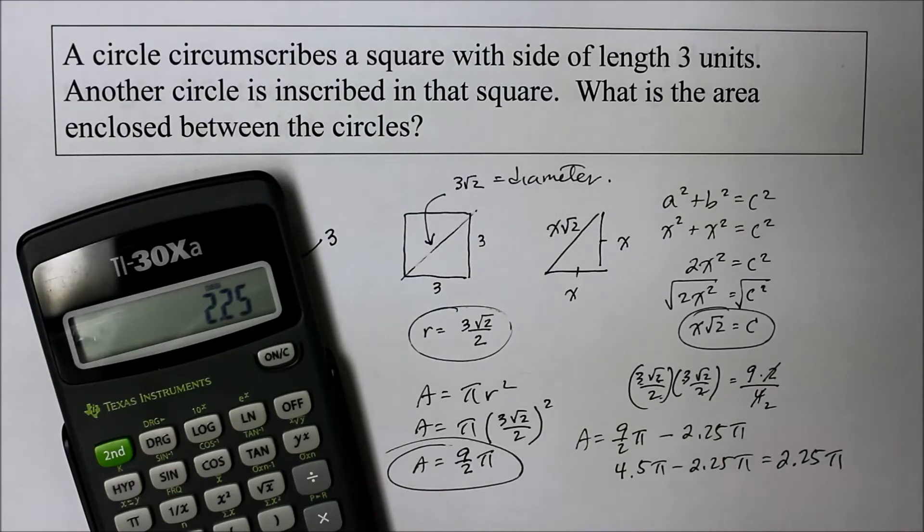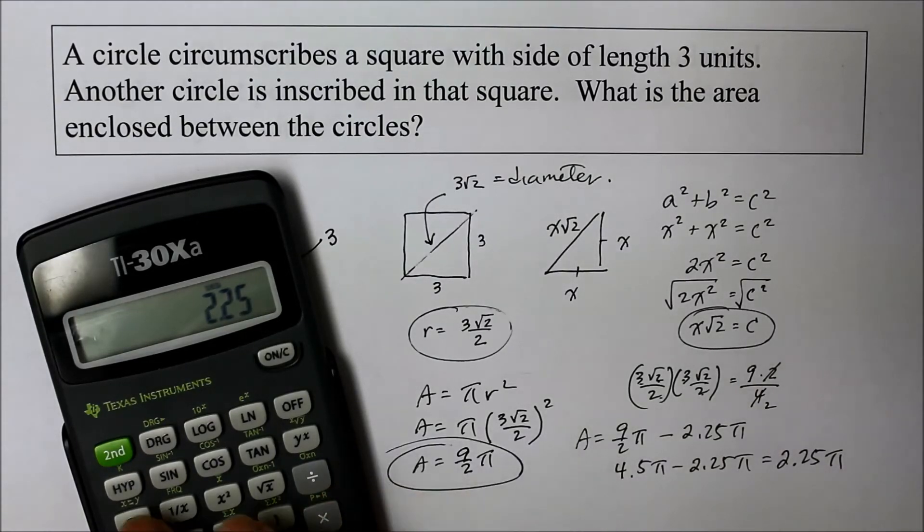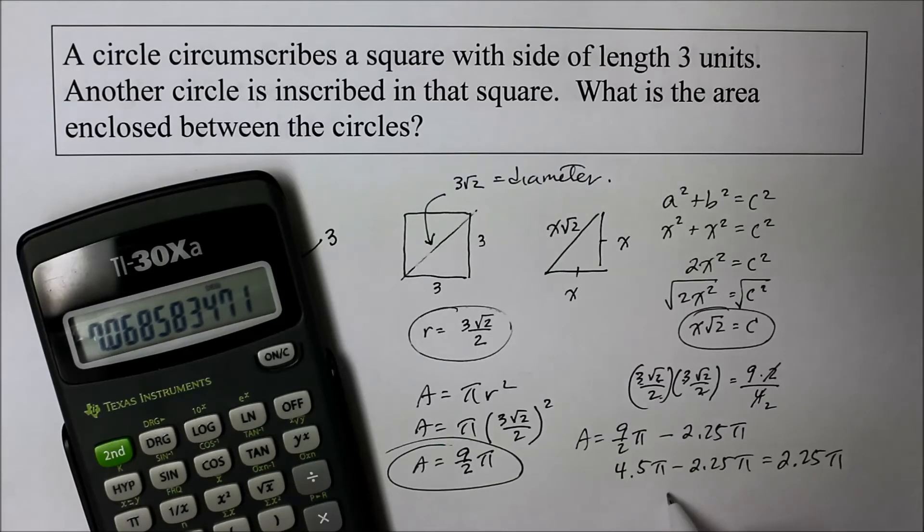That gives me 2.25 pi. And what's 2.25? Let's take that and multiply it by pi. That's approximately 7.069 unit squared.